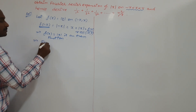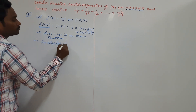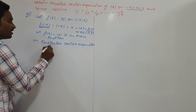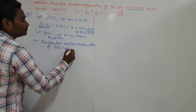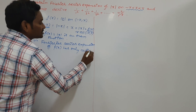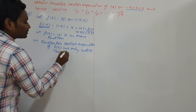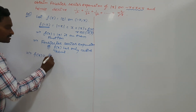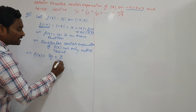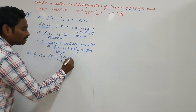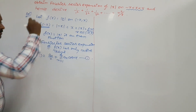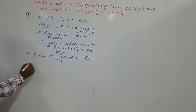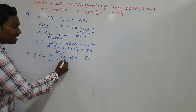Since f(x) is an even function, its Fourier series expansion has only cosine terms. The Fourier series expansion of f of x becomes: a₀ by 2 as the first term, plus summation n equals 1 to infinity of aₙ into cosine nx. It is enough to calculate a₀ by 2 and aₙ.